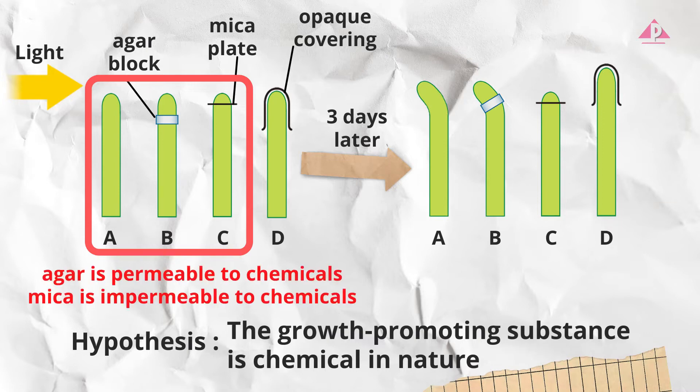Also consider the properties of agar and mica. Agar is permeable to chemicals but mica is not. Thus we can conclude that the growth promoting substance is chemical in nature.